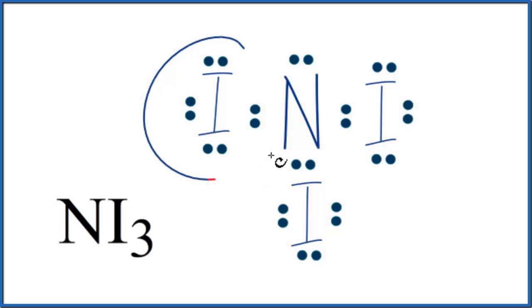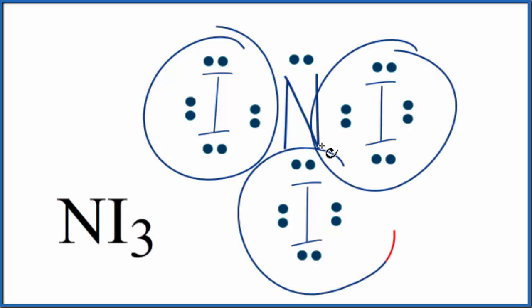So we'll note that each iodine atom has an octet, and the central nitrogen, that has an octet as well. We also have this lone pair up here that we need to be aware of. So you can imagine that each iodine and the lone pair, they're all pushing away from each other, and that's what's going to give us the molecular geometry for NI3.